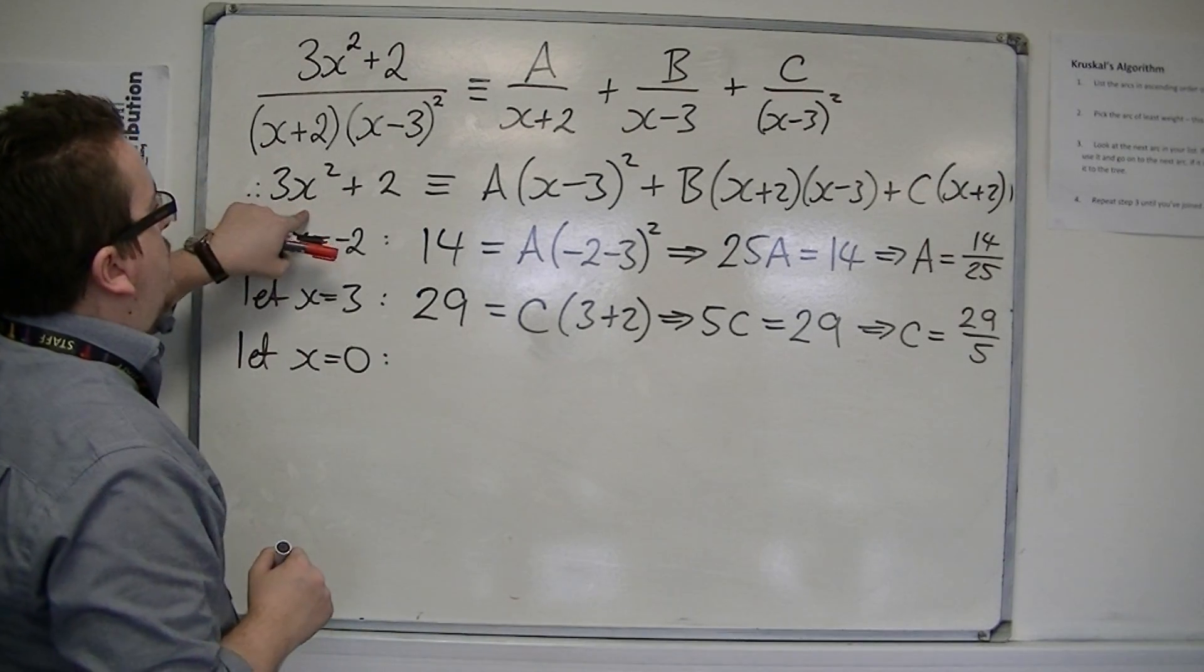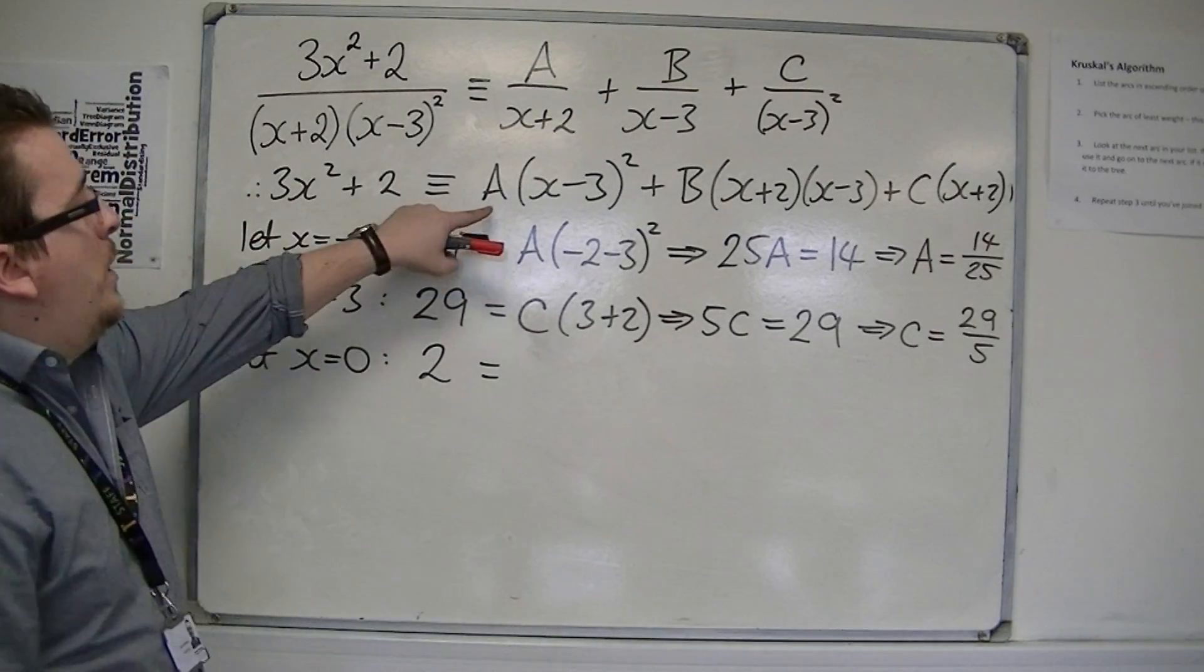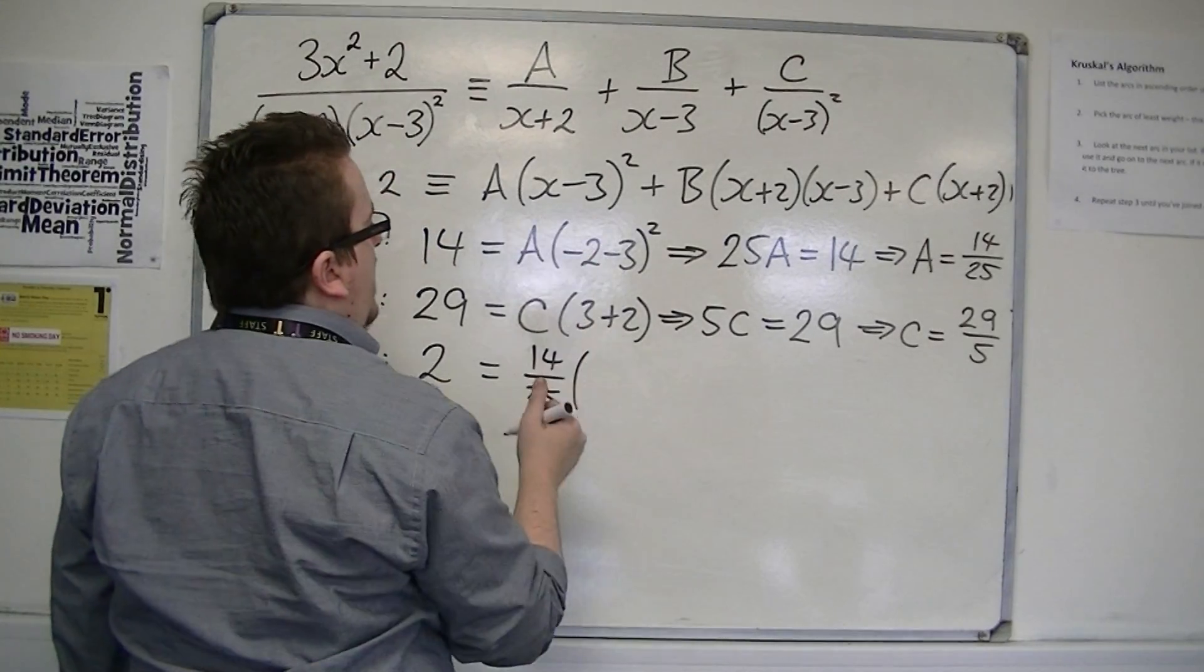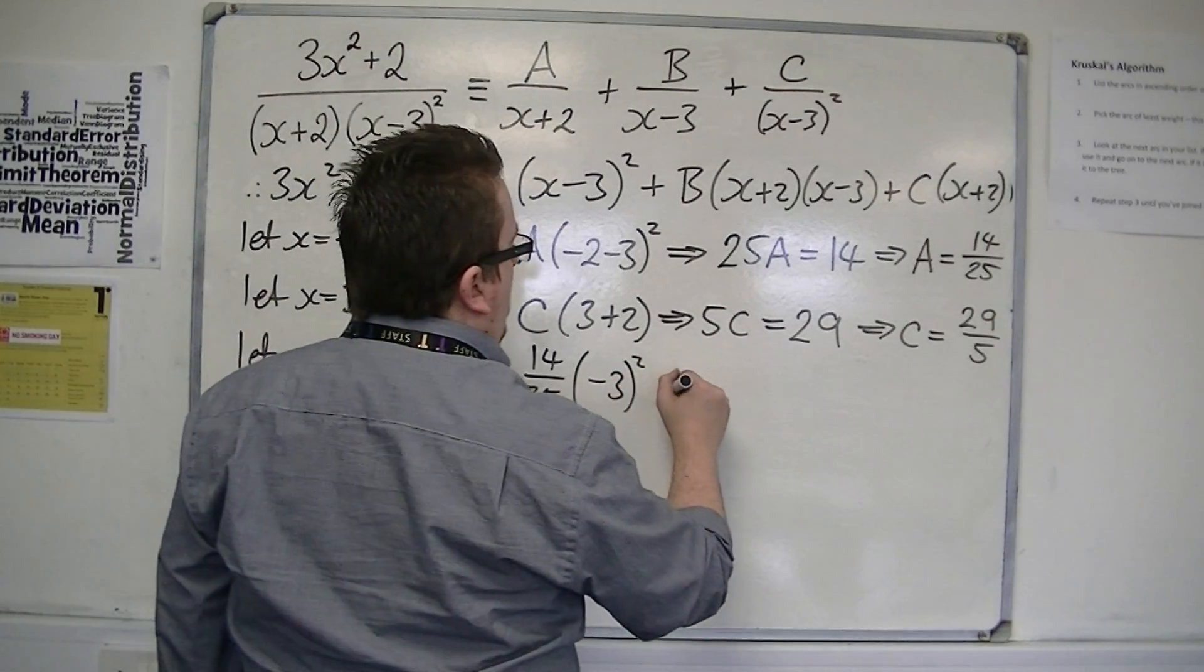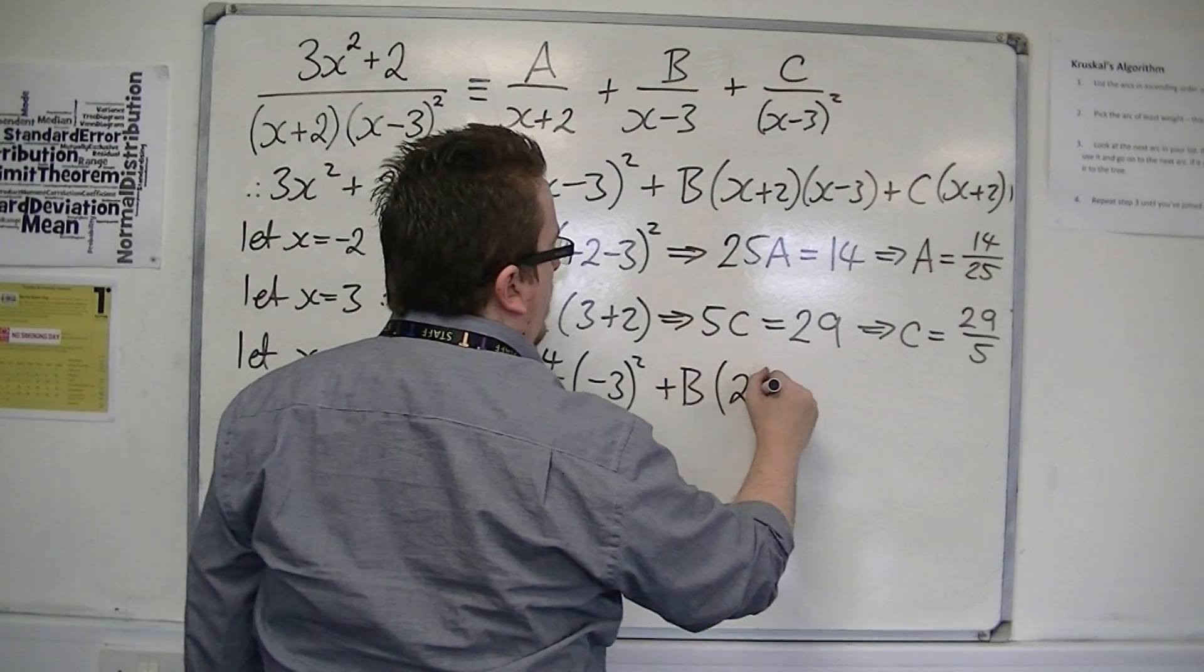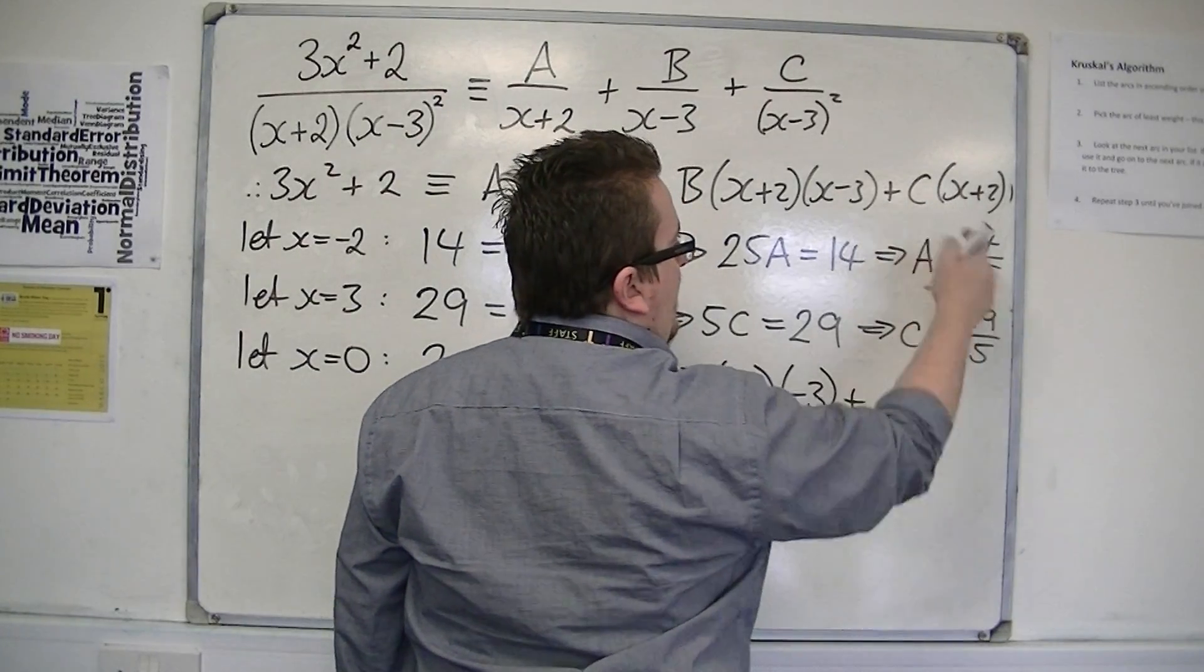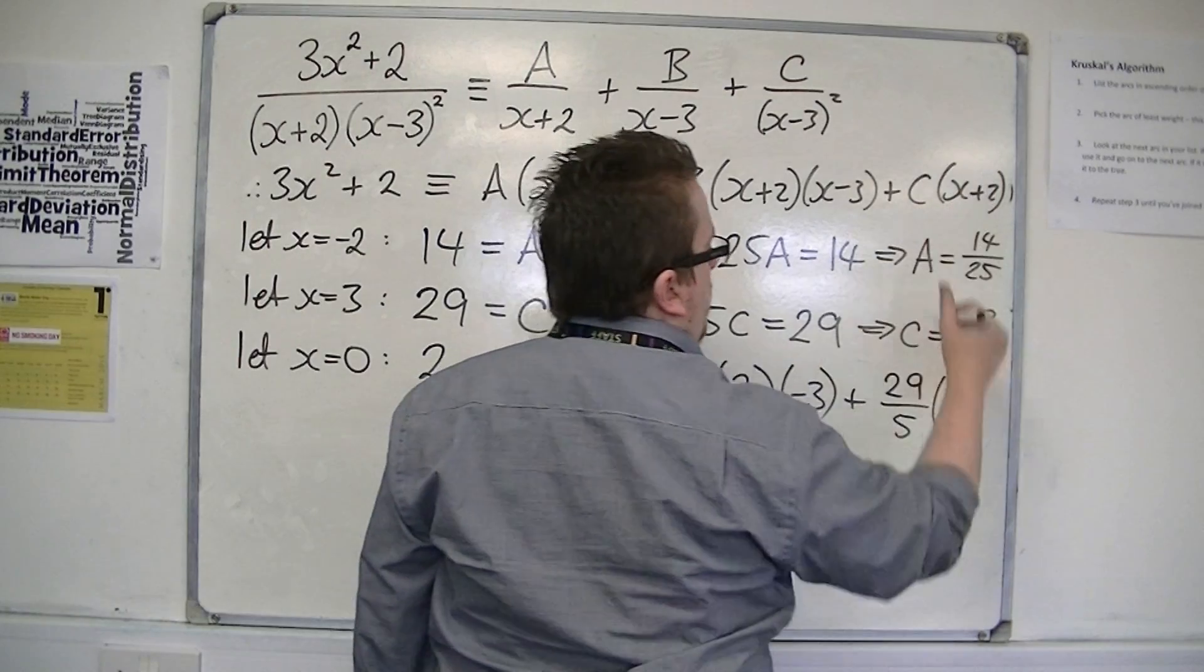So, I get 3 times 0 squared plus 2, so that's just 2. Now, I already know what A is. That's 14-25ths, times 0 take away 3, so minus 3 squared, plus B times 0 plus 2, times 0 minus 3, plus C, because I know what C is, it's 29-fifths, times 0 plus 2.